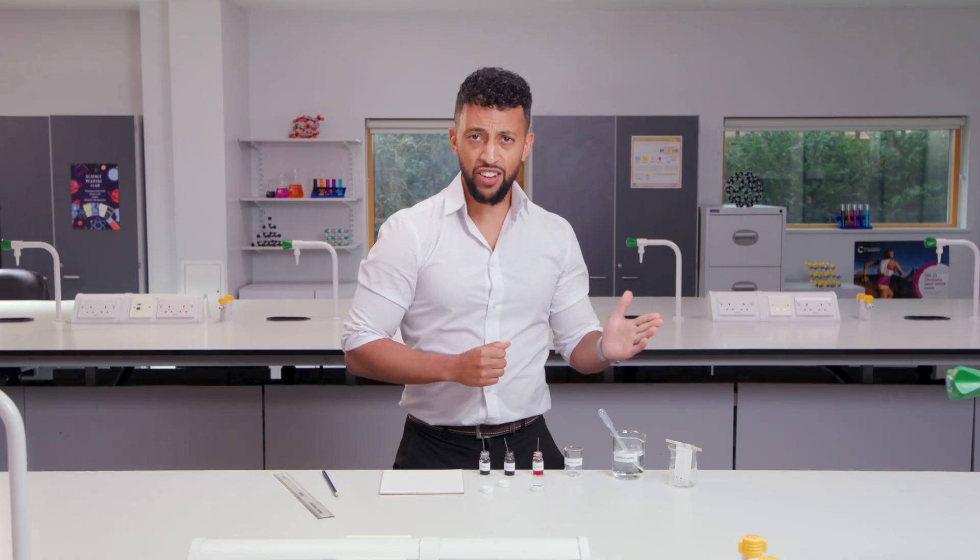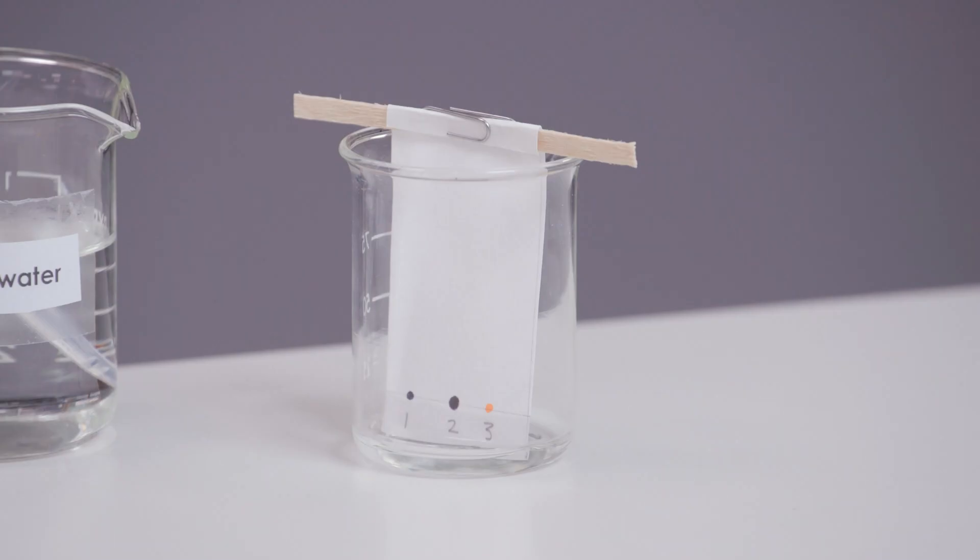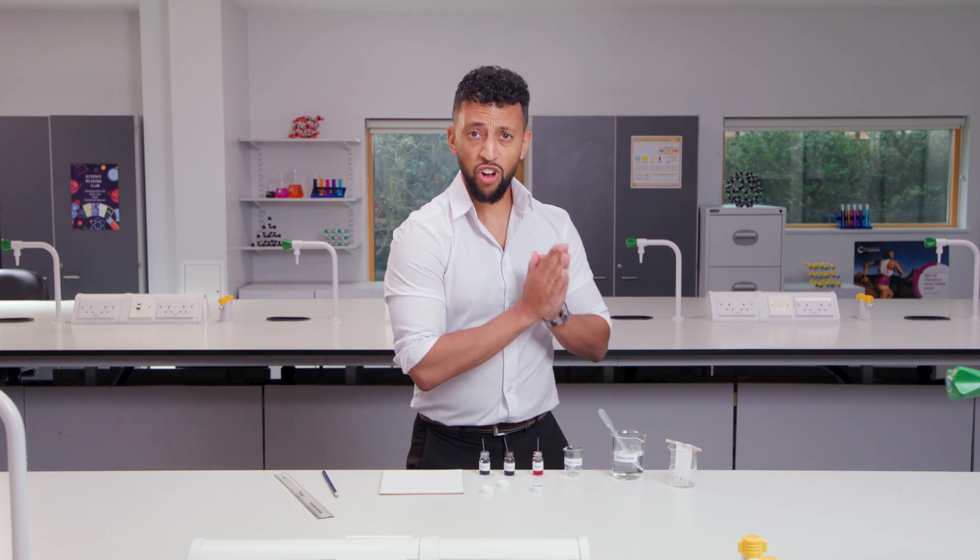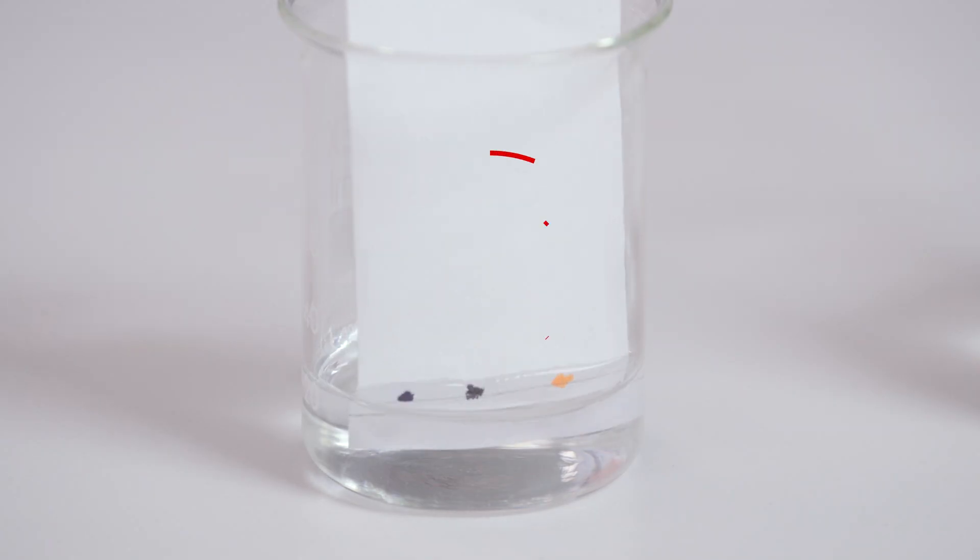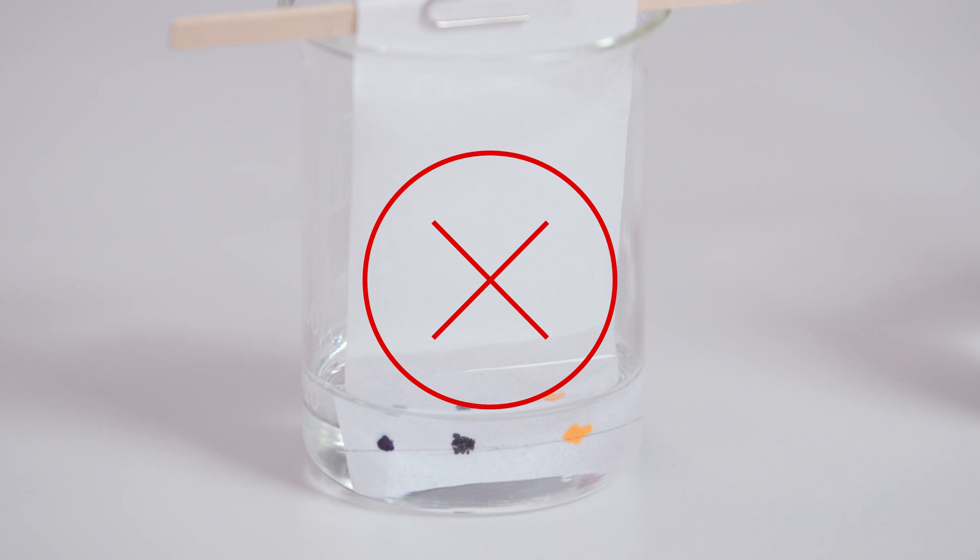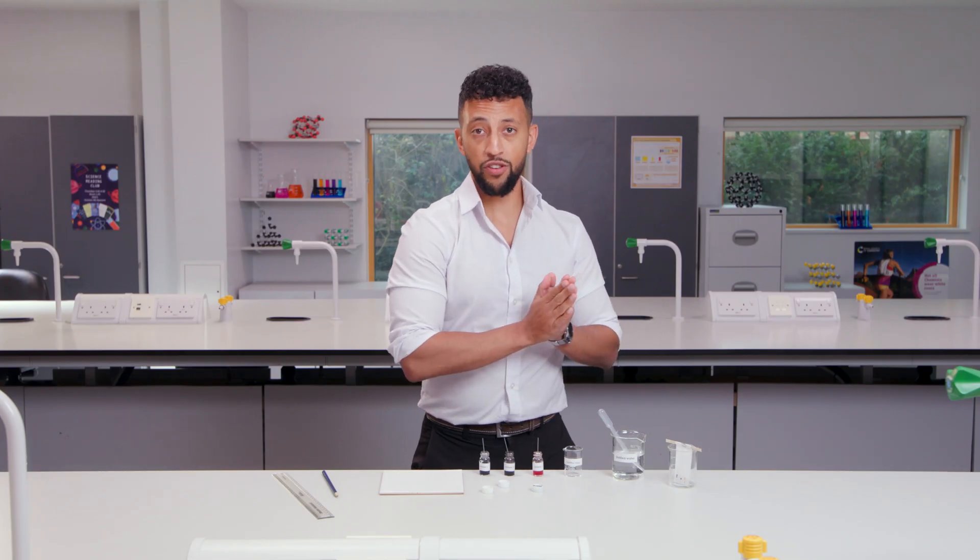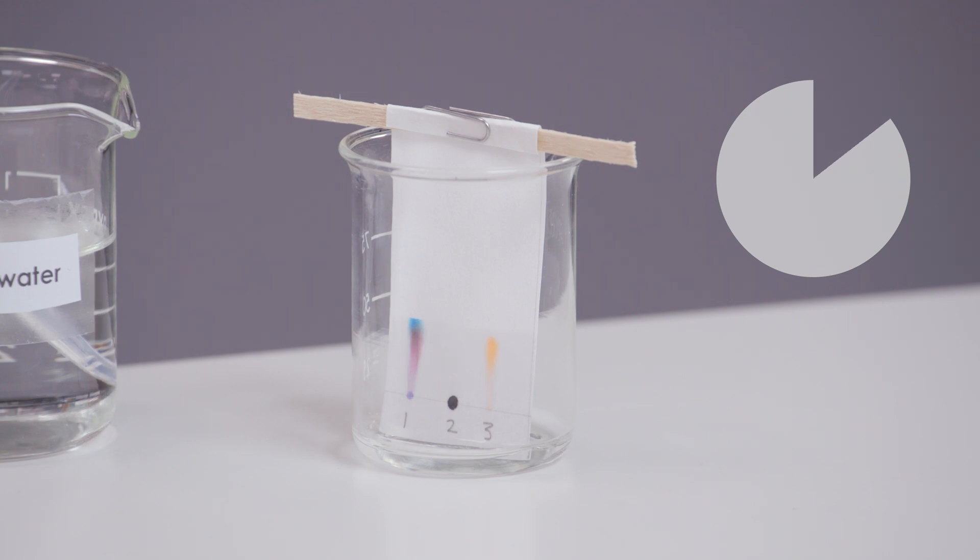You can see that the ink samples on the pencil line are above the water. This is important. If the water level was higher than the ink samples, the soluble samples would dissolve in the water and there'd be none left on the filter paper. I will leave the beaker and its contents until the water has reached just below the paper clip.